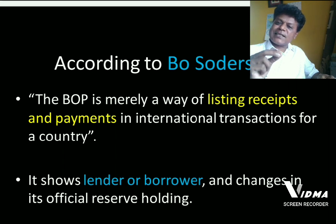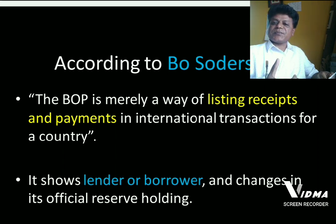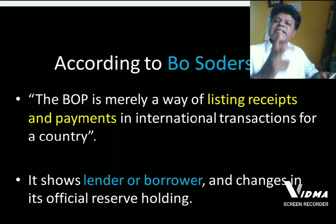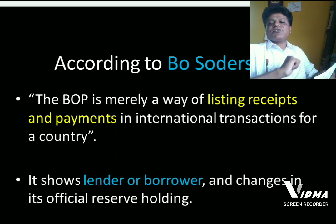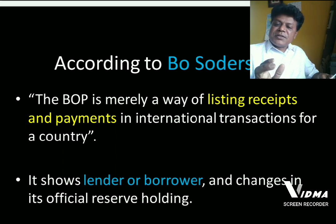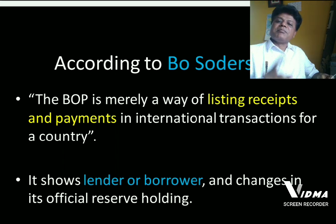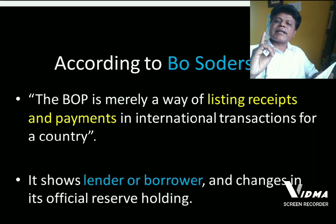According to Bo Soderstan, balance of payment is a statement which shows the receipts and payments of a country related to international transactions. It shows who are the lenders and who are the borrowers, and what are the official changes in reserve holdings. Reserves may be cash or gold. In summary, balance of payment is a statement which shows receipts and payments exclusively related to international transactions.